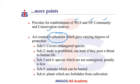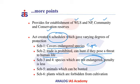Schedule 1 covers endangered species whose trade and killing is prohibited — for example, tigers. Schedule 2 covers animals whose trade is prohibited but which can be hunted if they pose a threat to human life. Schedules 3 and 4 deal with species that are not endangered, with much lower penalties for killing compared to Schedules 1 and 2. Schedule 5 deals with animals that can be hunted, such as rats, and Schedule 6 deals with plants that are forbidden from cultivation.